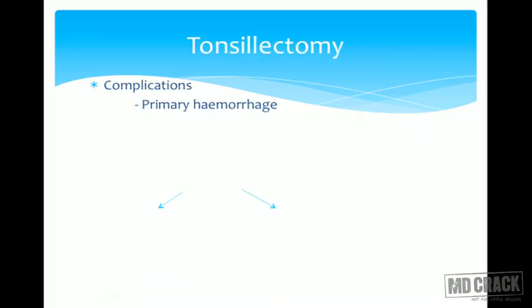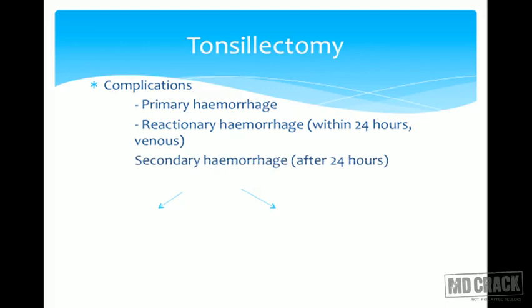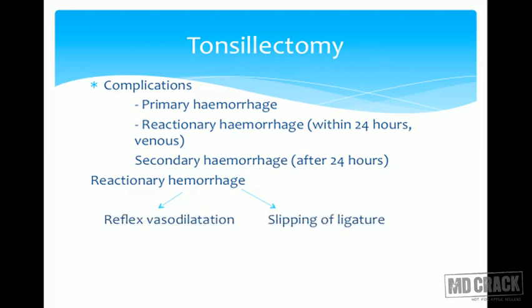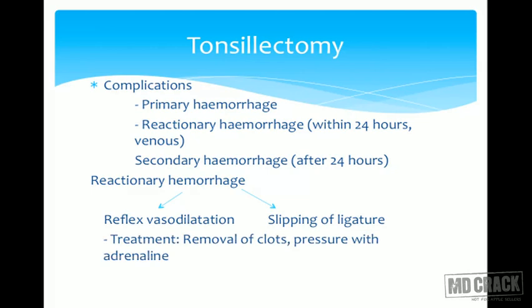The most common complication of tonsillectomy is hemorrhage, which can be primary (during surgery), reactionary (within 24 hours, venous in origin, due to reflex vasodilation or slipping of ligature), or secondary (after 24 hours, due to infection). Management of reactionary hemorrhage: remove clots and apply pressure with adrenaline.